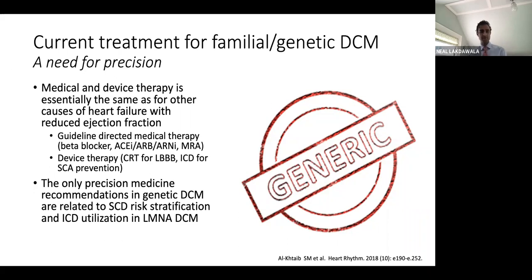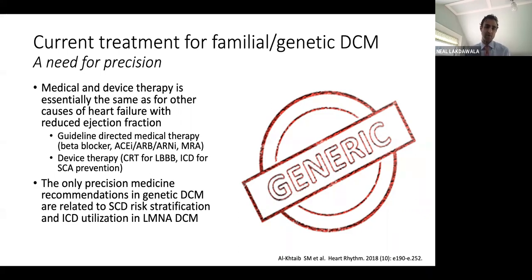With a few important exceptions, medical therapy and device therapy is essentially the same as for other causes of heart failure with reduced ejection fraction. The emerging difference relates to device therapy — specifically defibrillators and resynchronization therapy. Perhaps the only guideline-level recommendation for precision therapy based on a genetic diagnosis was published in 2018 in the ACC/AHA/HRS VT Management Guidelines, which called out a specific risk stratification tool for patients with lamin cardiomyopathy, which I'll touch on later.